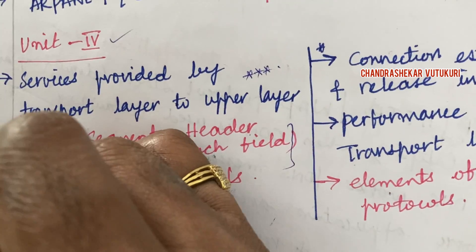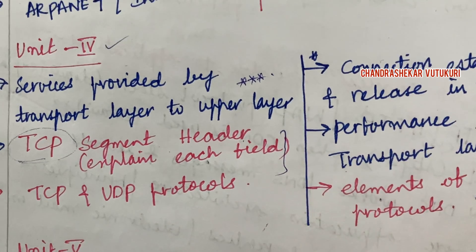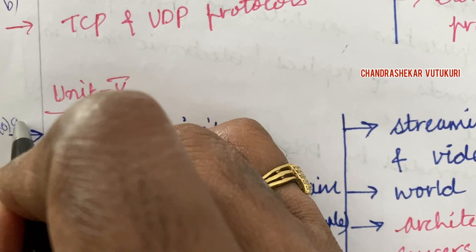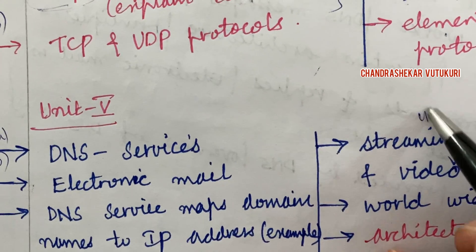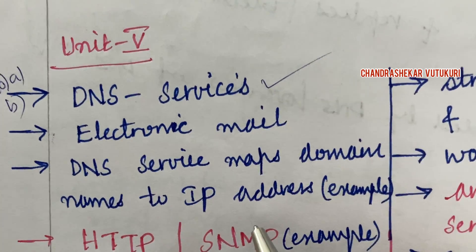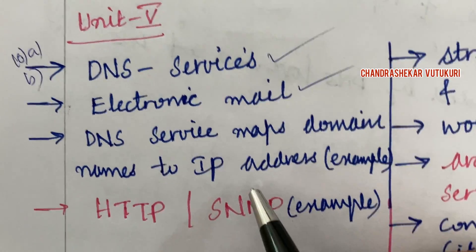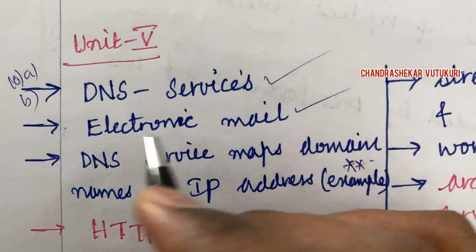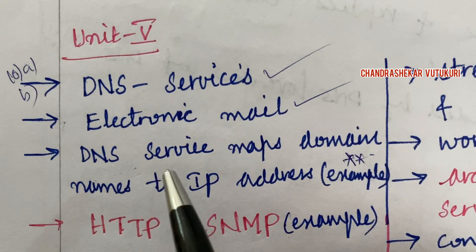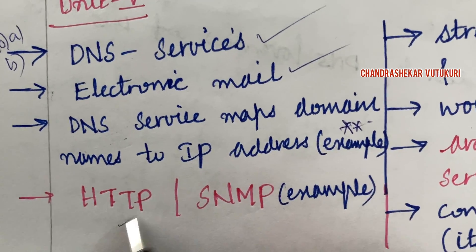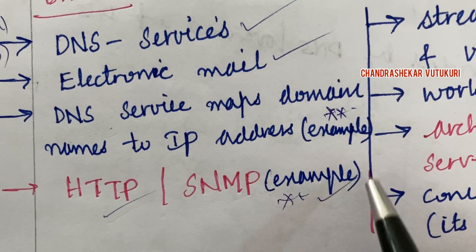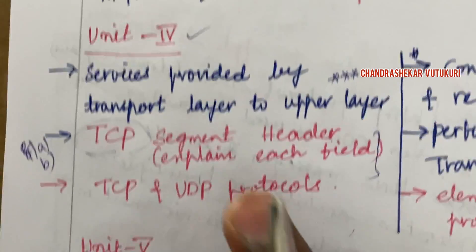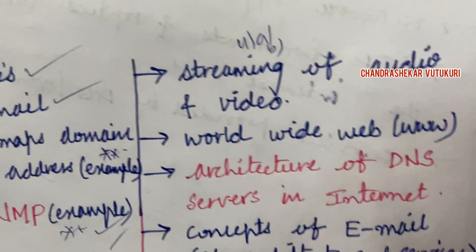The question numbers here are 8 and 9. Later I am going to discuss 10A, 10B, 11A, and 11B. DNS service is said to be a short question. Electronic mail is also a short question. DNS service maps domain names to IP addresses — along with an example — you are going to get a sure question this time. HTTP may be a small question, and SNMP along with its example may be a short question this time.